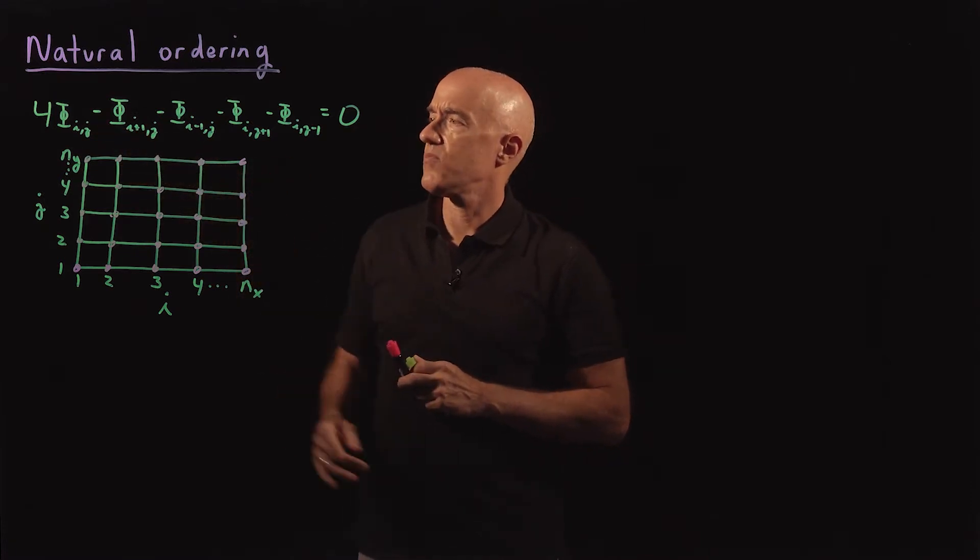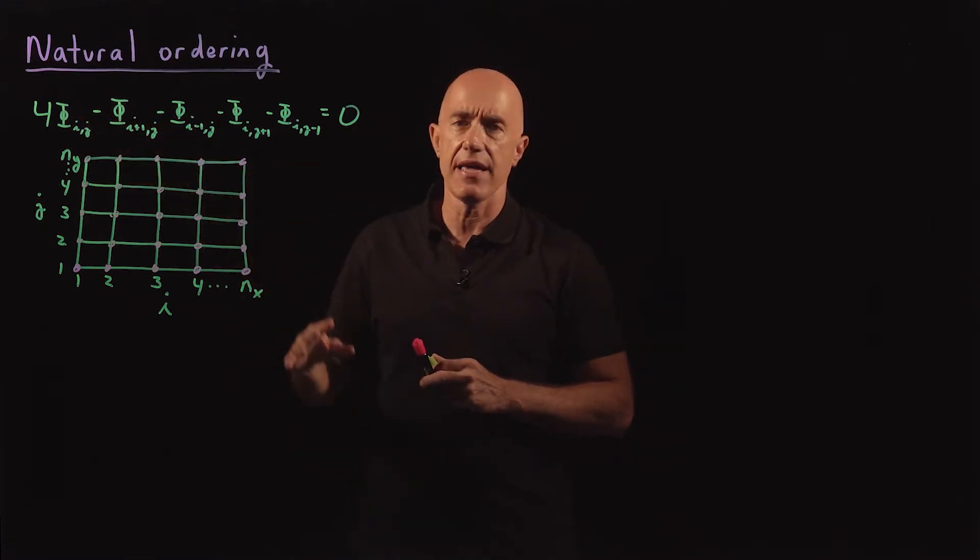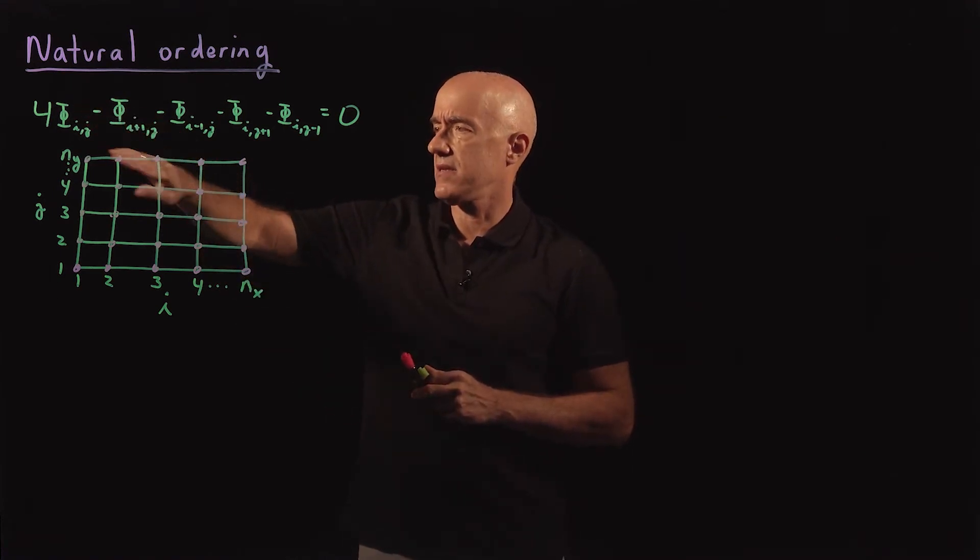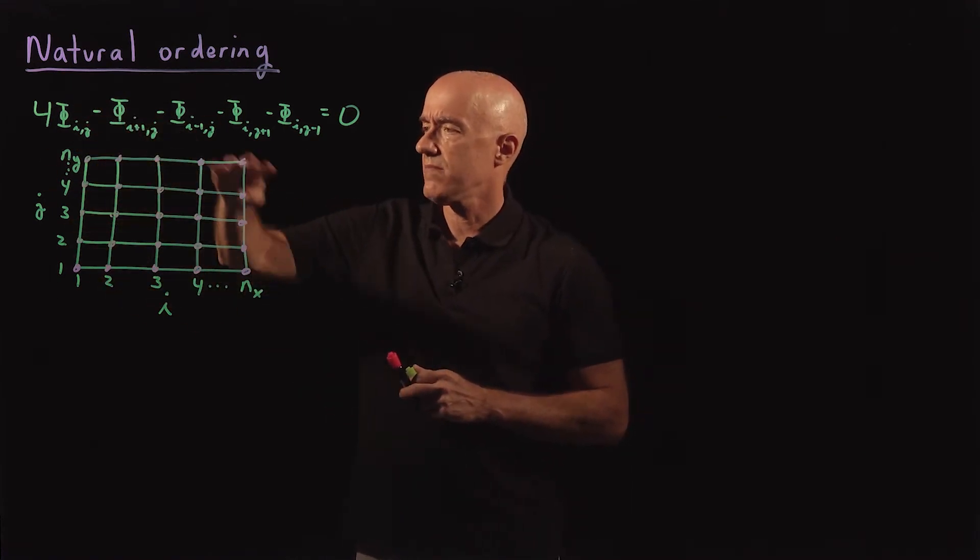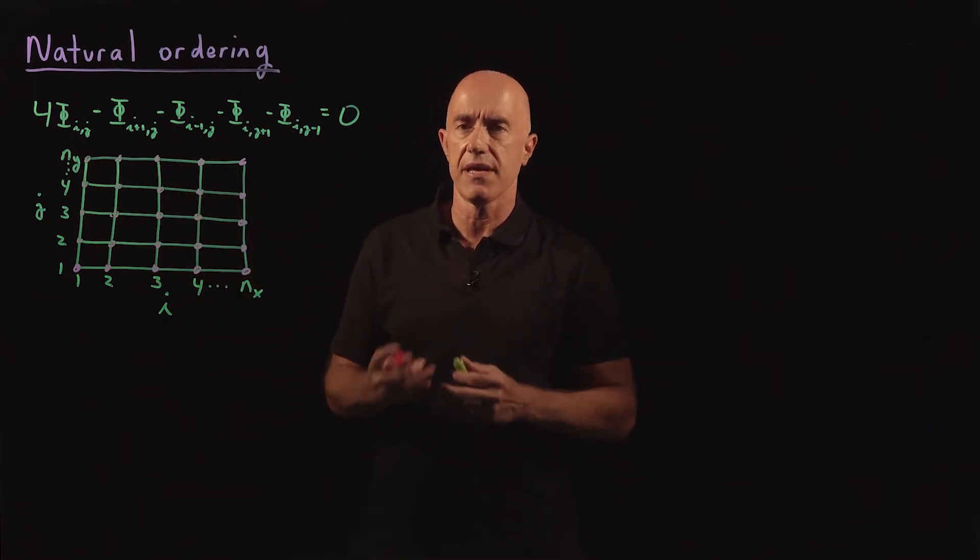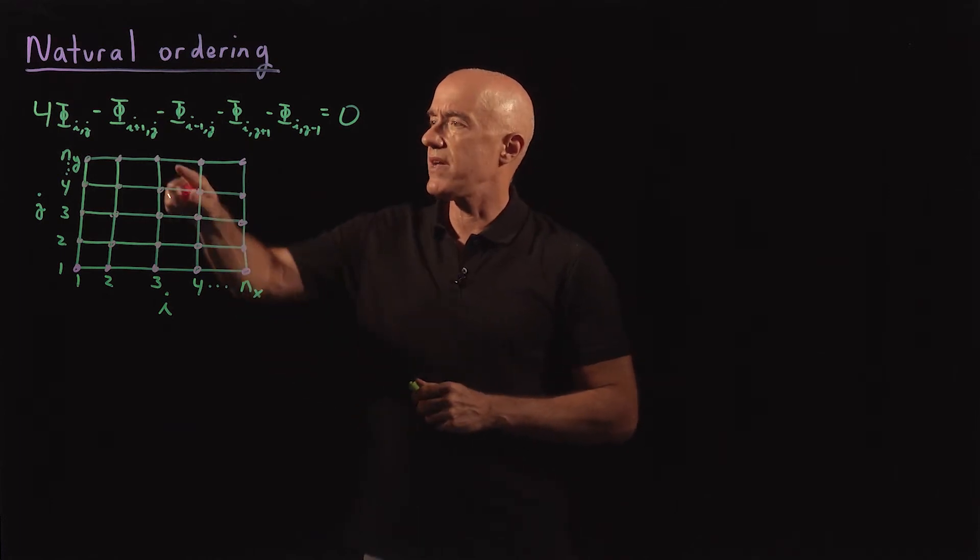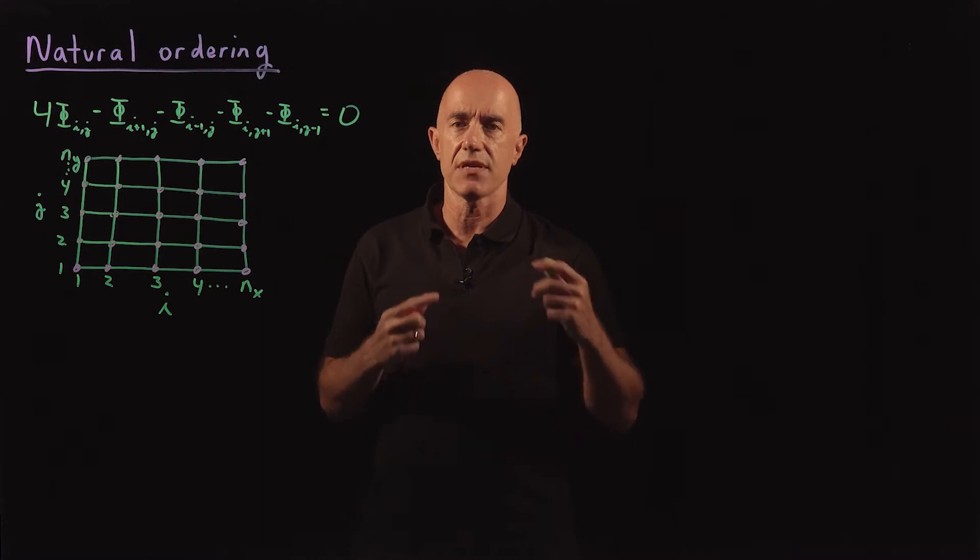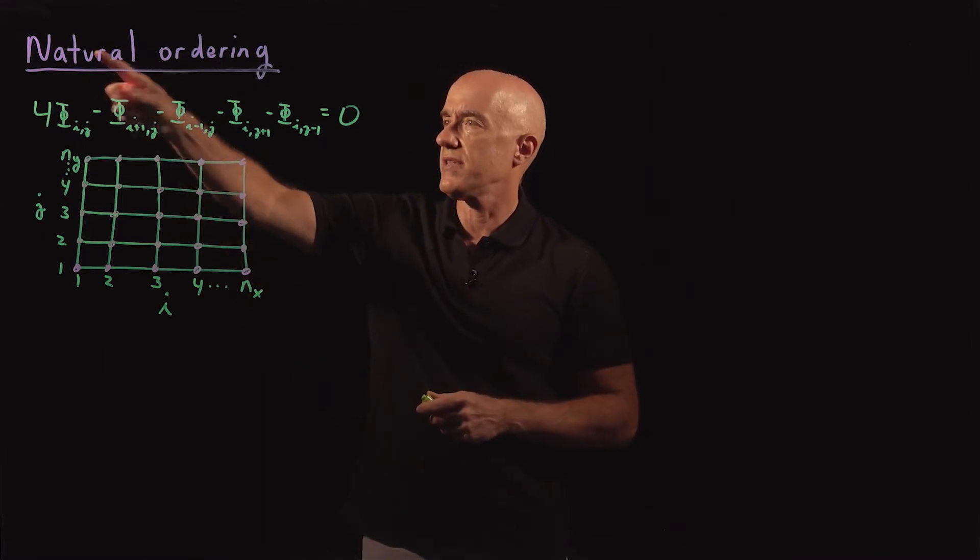But to do that, we need to write phi as a column vector. Right now, phi is, in some sense, a matrix, because it has values on a two-dimensional grid, but we want phi to be a column vector. The way to order the values of phi so that it becomes a column vector is called natural ordering.